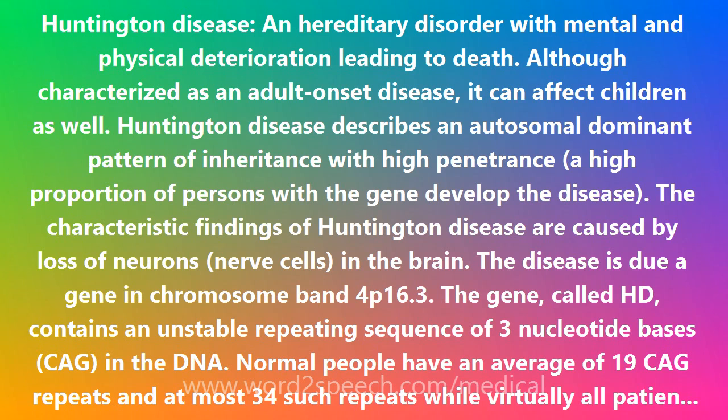Normal people have an average of 19 CAG repeats and at most 34 such repeats, while virtually all patients with Huntington disease have more than 40. The HD gene codes for a protein named Huntingtin, whose function is unknown. The elevated numbers of CAG repeats lead to the production of an elongated Huntingtin protein, which appears to correlate with the loss of neurons in the disease.